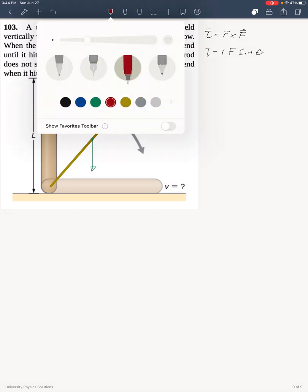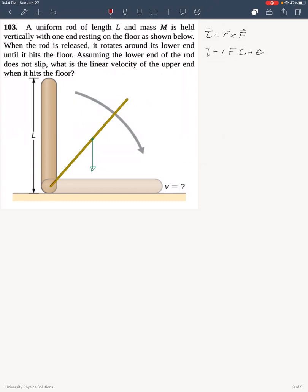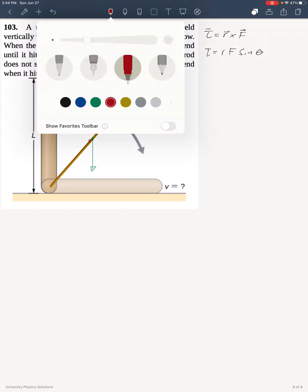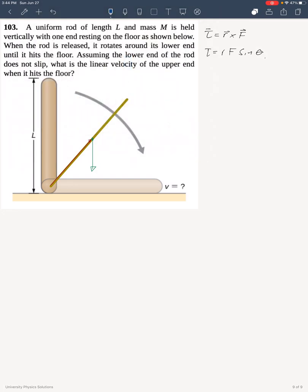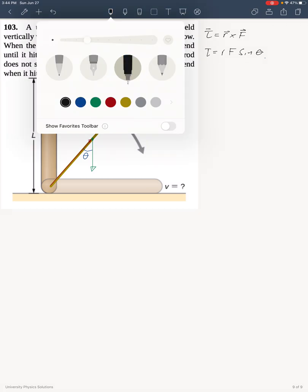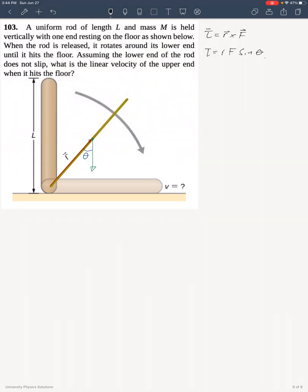W equals mg. Its lever arm is measured from the axis of rotation to where the force is applied. And so theta has to be the angle between those two vectors.